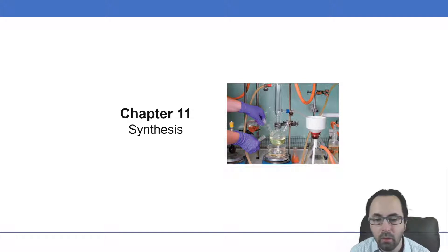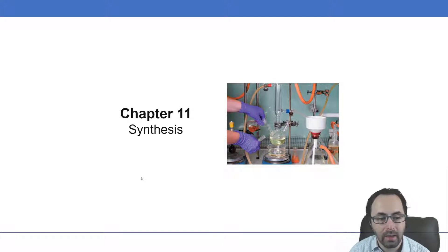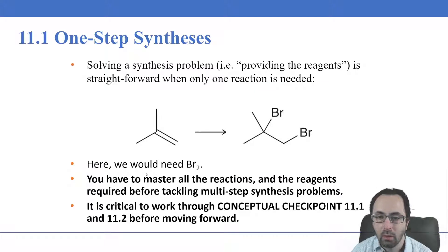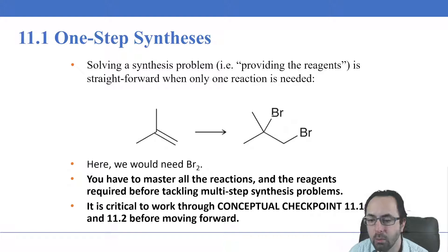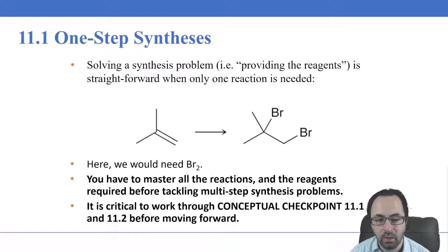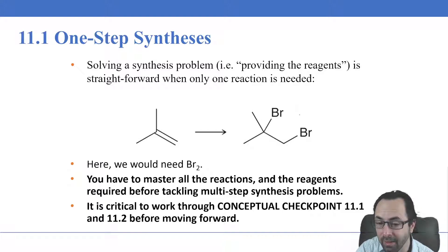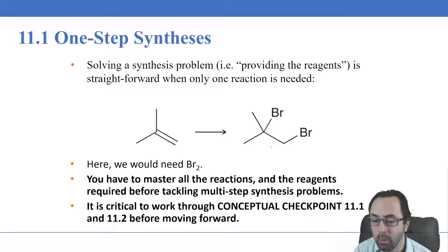The goal of today's lecture is to give you a few hints on what you should be looking out for when you're planning the steps in your synthesis. We've talked about one-step syntheses as they relate to the various reactions in our chapters. For example, if we start with this alkene and we're asked how we can make this dihalide, this is just a one-step synthesis — a halogenation, a reaction we encountered in chapter 8.